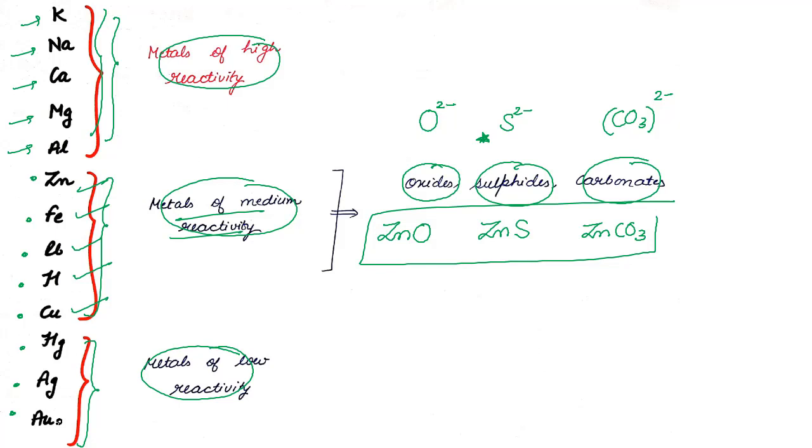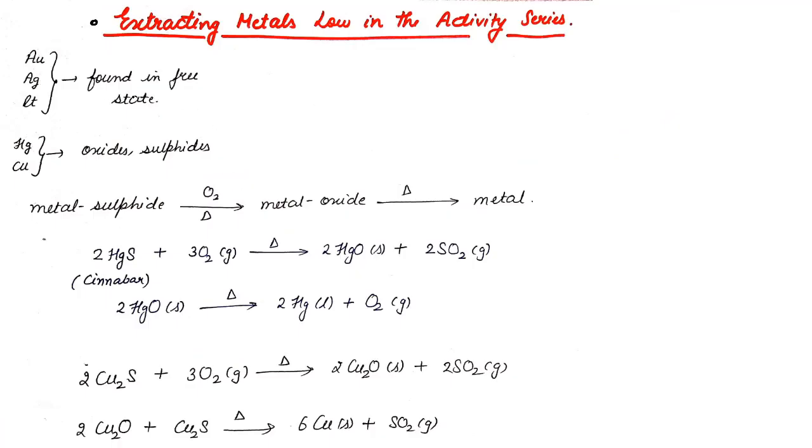Out of which, if I talk about gold, if I talk about silver, if I talk about mercury, these are the kinds of elements which are actually found in the free state in nature. Why are they found in free state? Because they are quite inert.